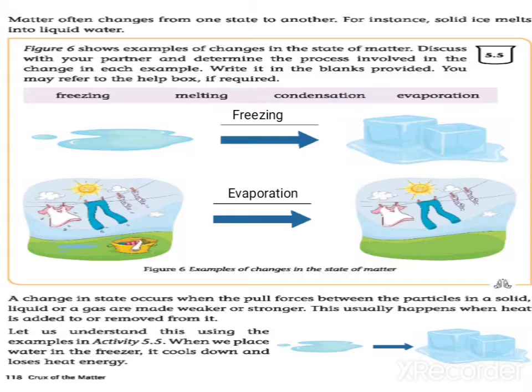Matter often changes from one state to another. For instance, solid ice melts into liquid water. The change in state occurs when the pull forces between the particles in the solid, liquid, or gas are made weaker or stronger. This usually happens when heat is added to or removed from it.